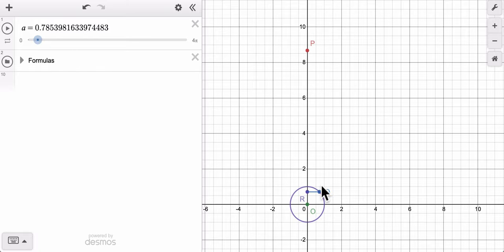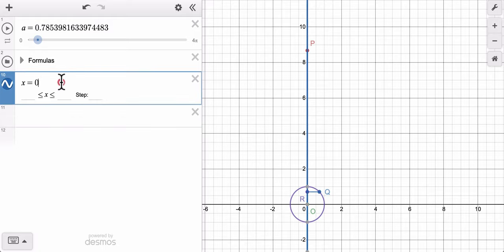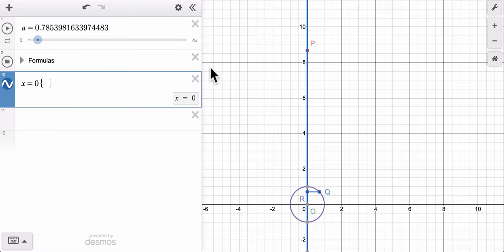I now need a segment between R and P. So I'm going to type in x equals 0, that gives me a vertical line, but I want to restrict the range. So how am I going to do that? I'm going to type in my curly brackets, shift and then bracket.